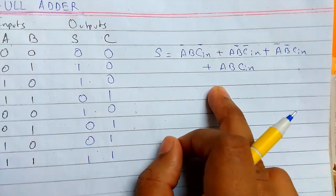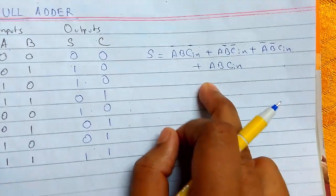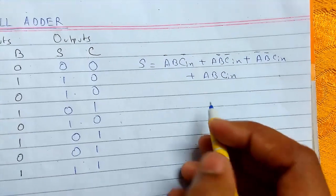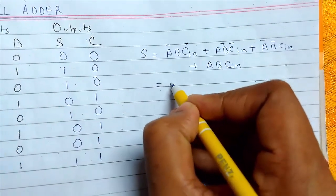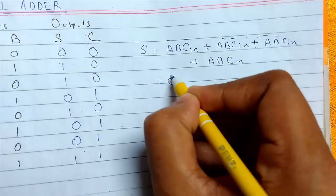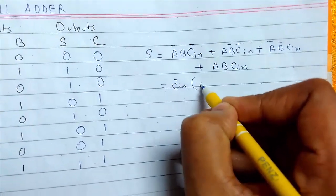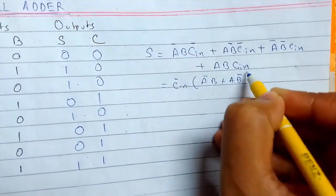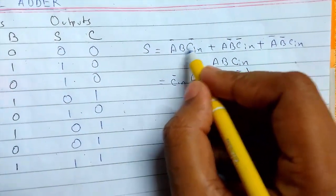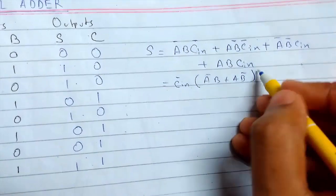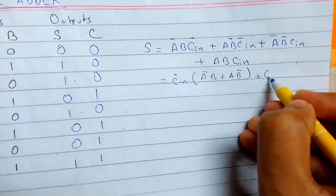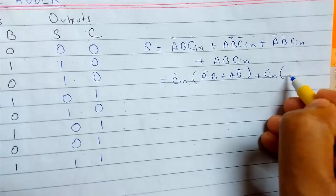This is the Boolean equation. We need to simplify this expression. First of all, we are taking C-bar in common, so we'll be getting A-bar B and A B-bar common from here.